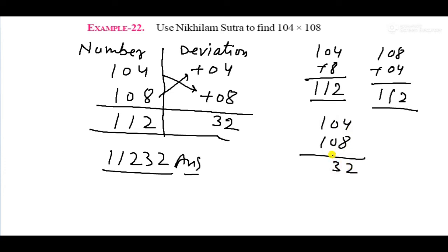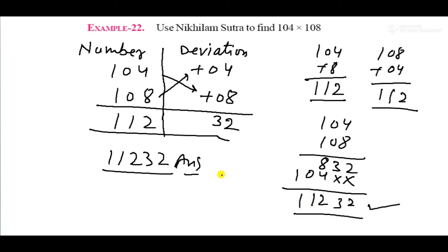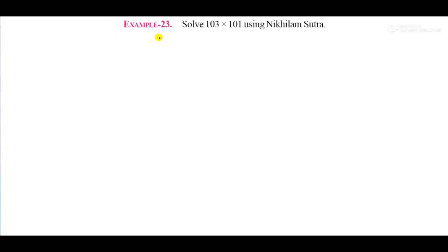It's very simple. Verify by direct multiplication of 104 times 108: 8 times 4 is 32, cross multiply 8 times 0 is 0 and 1 is 8, then 4 times 0 is 0 and 1 is 4, and 1 times 1 is 1. Result confirms 11232. This answer is correct.